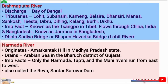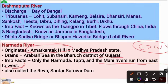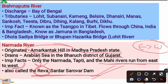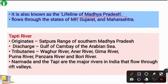The Narmada River originates from Amarkantak in Madhya Pradesh and drains into the Arabian Sea in the Bharuch district of Gujarat. Only the Narmada, Tapi, and Mahi rivers run from east to west and drain into the Arabian Sea. The Narmada is also called the 'Reva River.' The Sardar Sarovar Dam is situated on it. It is known as the 'Lifeline of Madhya Pradesh' and flows through the states of Madhya Pradesh, Gujarat, and Maharashtra.